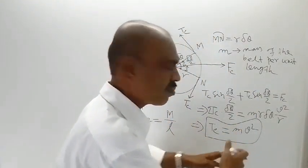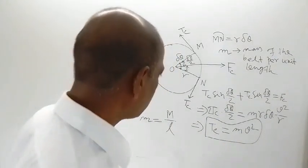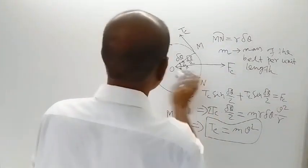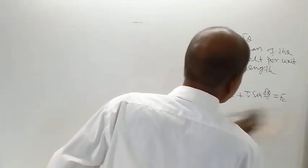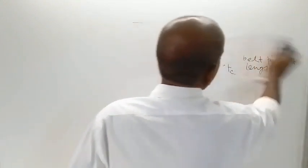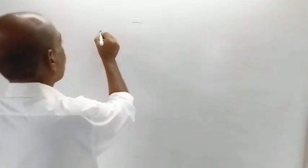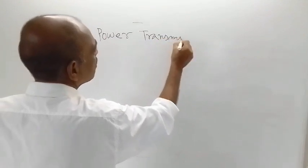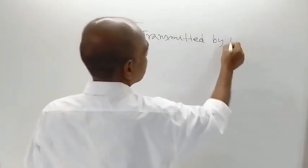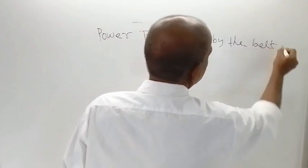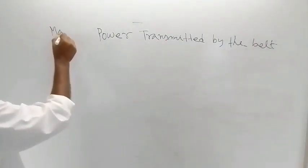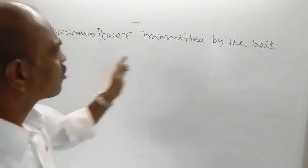That mass has been used here. So now we have got the expression for Tc. I need to erase this portion. The topic should be corrected — our target was maximum power transmitted by the belt, so I should write 'maximum' here. Maximum power transmitted by the belt.